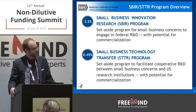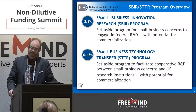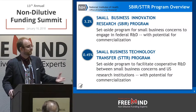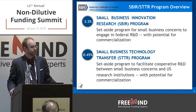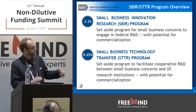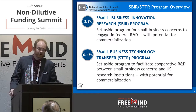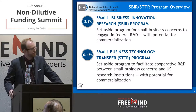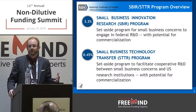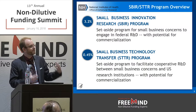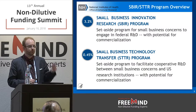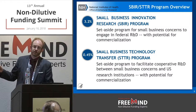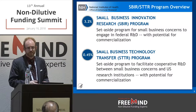SBIR and STTR are congressionally mandated programs — a set-aside of the extramural budget. At NIH, that's about 80% of our overall budget. So 3.2% of our extramural goes to SBIR (Small Business Innovation Research) and 0.45% for STTR. They're very related programs; in our agency they're treated more or less as one and the same, with different pots of money but identical rules except for two differences we'll discuss. The success rates are about the same despite STTR being smaller in percentage.